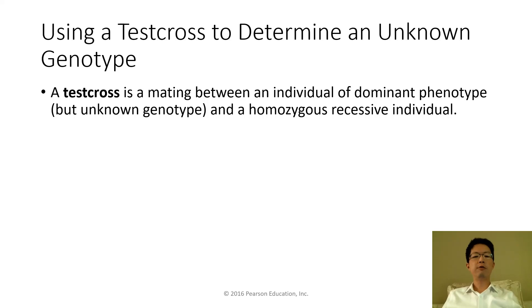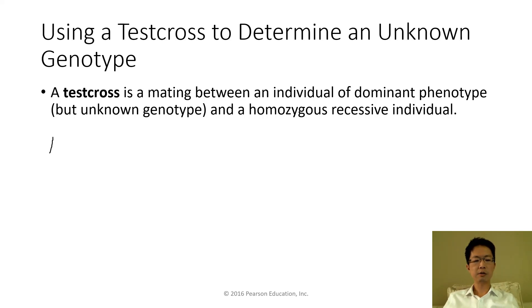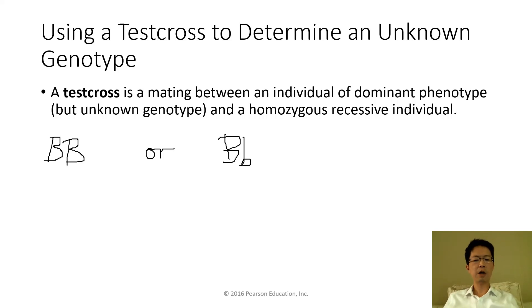What if we don't know the genotype? For example, if we have a black Labrador retriever, how do we know whether it is homozygous dominant (big B, big B) or heterozygous dominant (big B, small b)? We can't tell from appearance alone. That's why geneticists use something called a test cross.